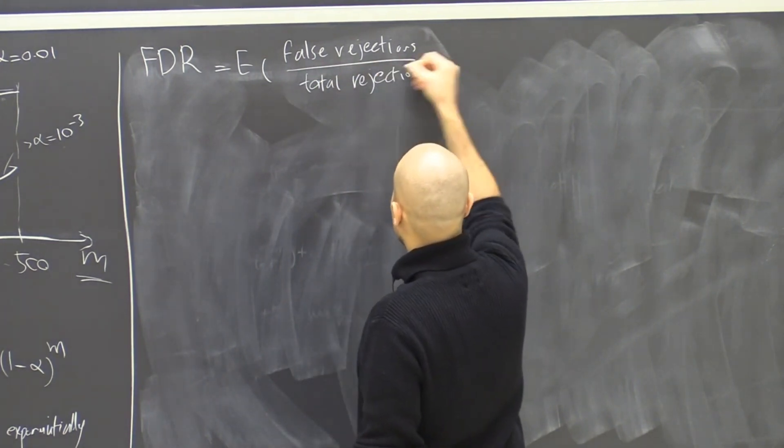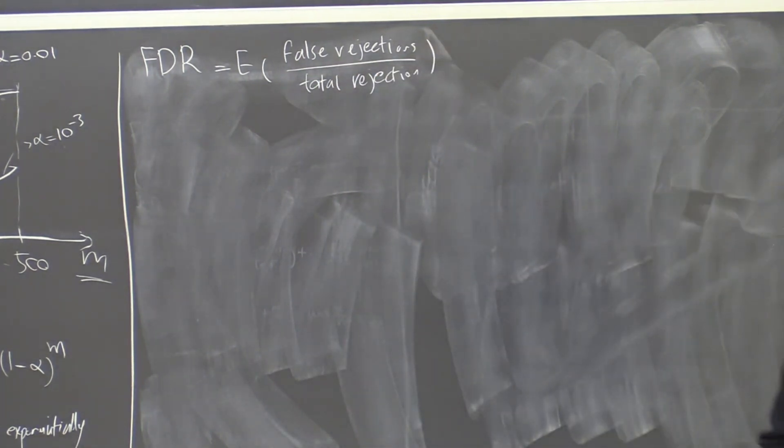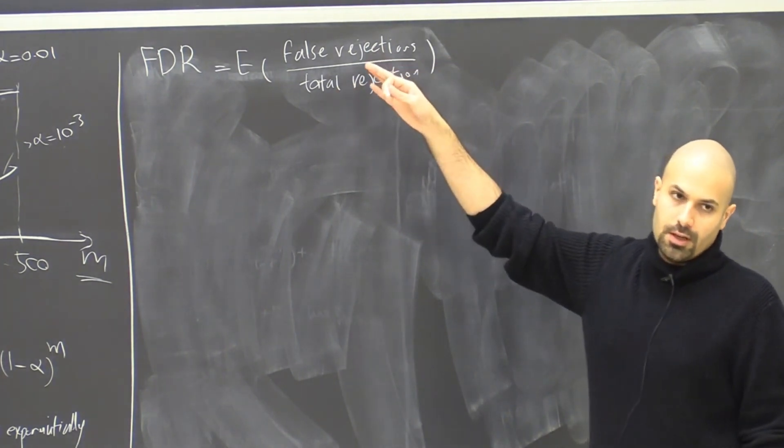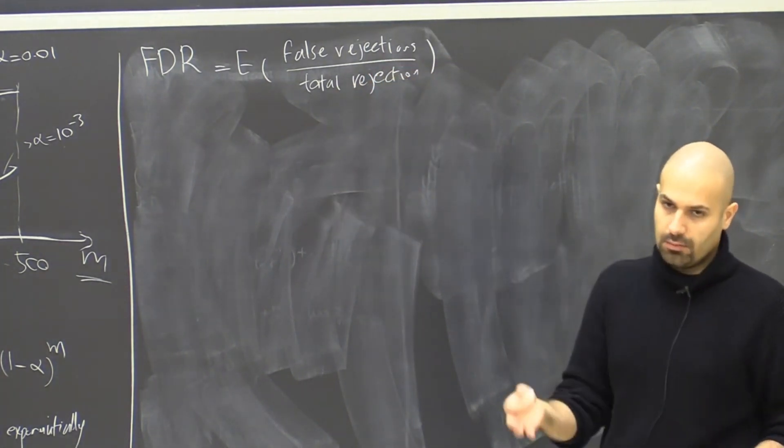We are still conducting M hypothesis tests, and then we decide to reject or not reject, and whether or not a rejection is false rejection or true rejection depends on the ground truth, which we don't have access to usually.